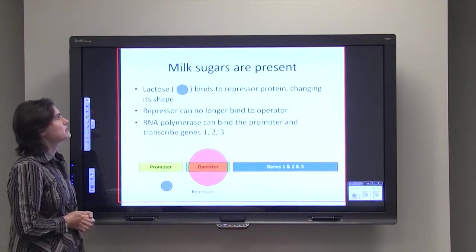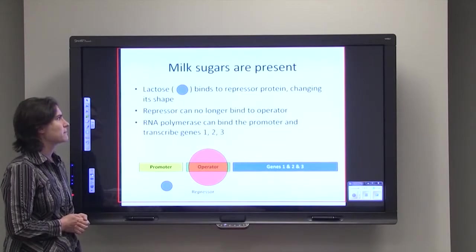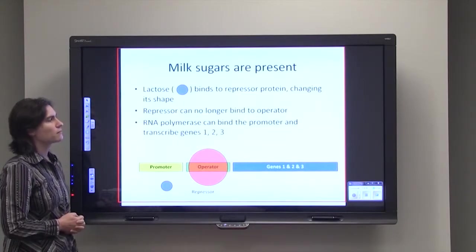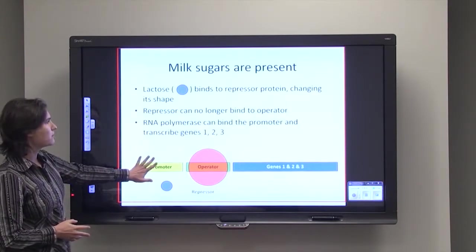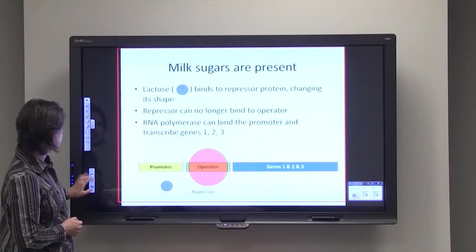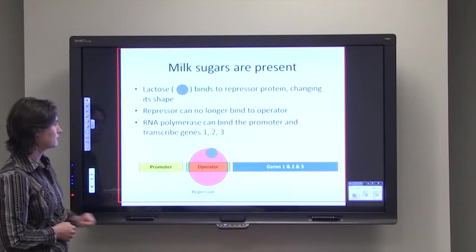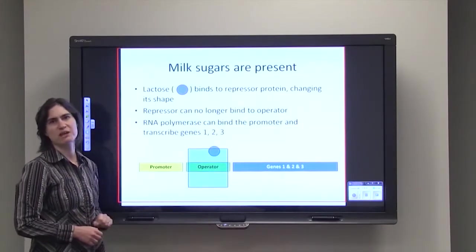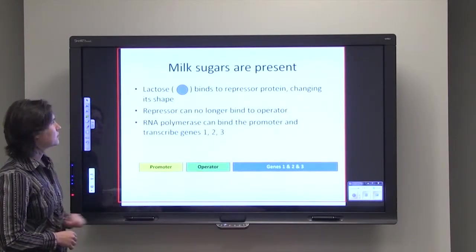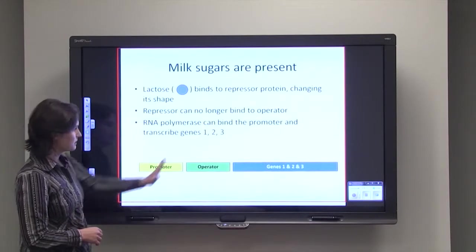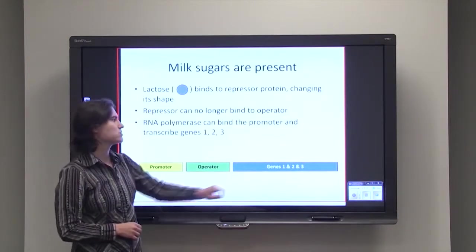But when milk sugars are present, lactose can bind to the repressor protein and change its shape. Then the repressor protein can no longer bind the operator. And then the RNA polymerase can happily bind the promoter, and genes one, two, and three can be transcribed. So we've got this little molecule of lactose. It can bind to the repressor protein, changing its shape. Now it can no longer bind to that operator sequence. And so since it can no longer bind, it goes away. And now RNA polymerase can bind the promoter, and then we can get transcription of genes one, two, and three.